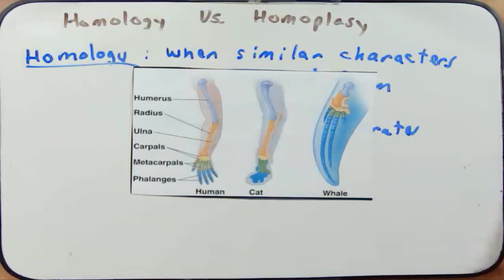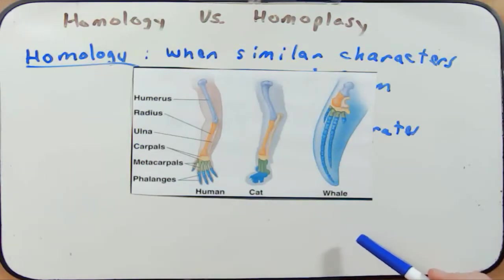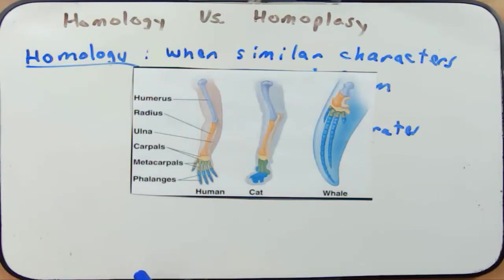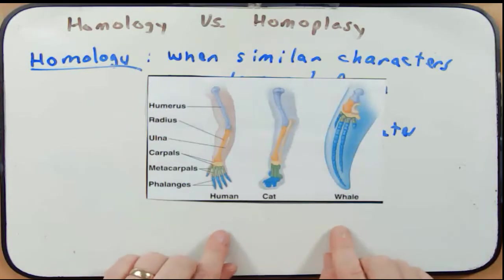The forelimb in vertebrates is a good example of homology. You can look at a human, a cat, and a whale and see similar structures like the humerus, the radius, the metacarpals, and phalanges. They have a similar shape and, to some extent, similar function, though the overall function is quite different. There are differences in overall size and some slight changes in structure. We would say these are homologous structures.